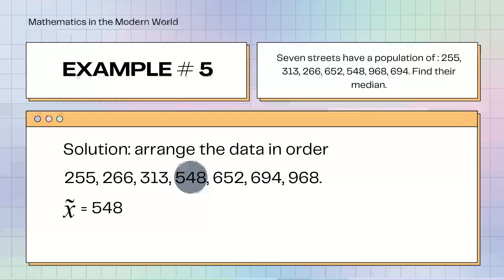Example number 5. 7 streets have a population of 255, 313, 266, 652, 548, 968, 694. Find their median. After we arranged the data in order from least to greatest, the median of example number 5 is 548.